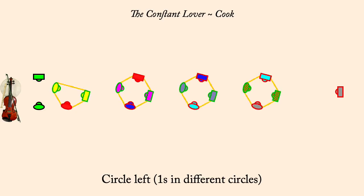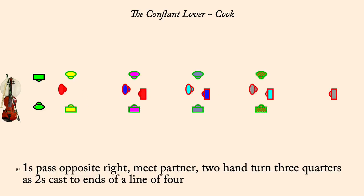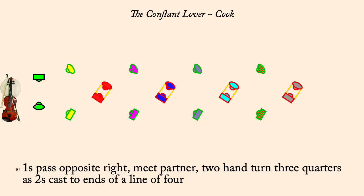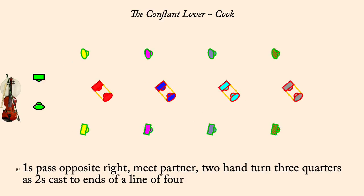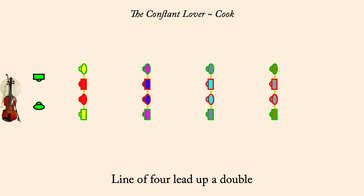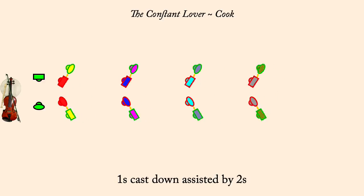One's pass opposite right, partner two-hand turn three-quarters as twos cast to a line. Line of four, up a double. One's cast down, twos assist.